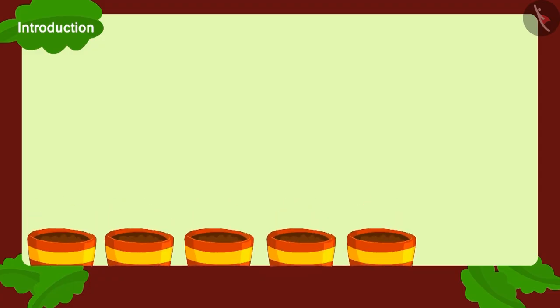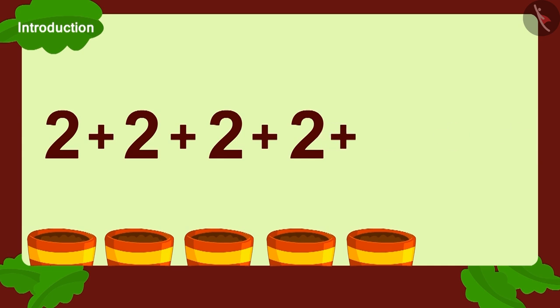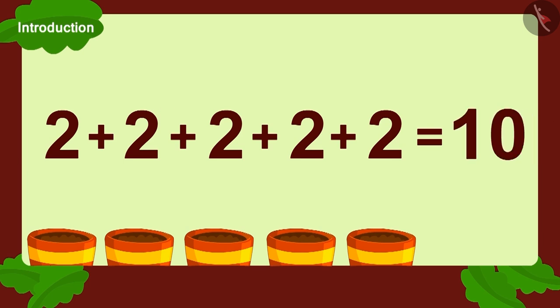Let's find out the total number of seeds by adding these seeds. Add two to two, again add two, again add two, and finally one more. How many seeds did we get? Ten seeds.